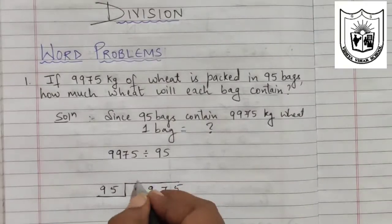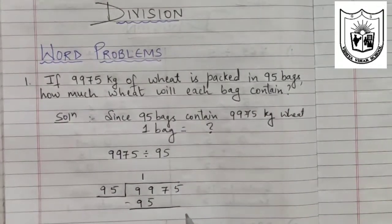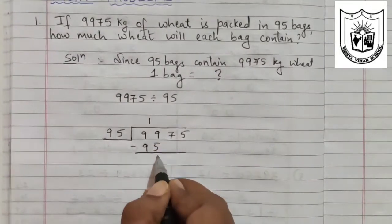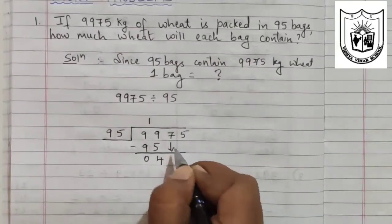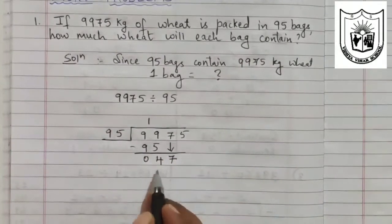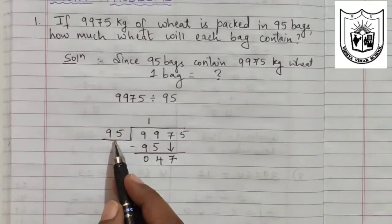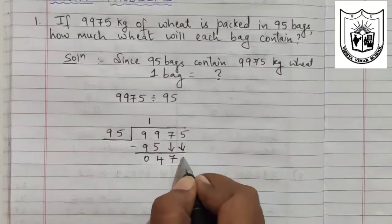So 95, 1's are 95. Subtract. 9 minus 5, we will have 4 remaining here. 0. Bring the next number down. So the new number formed is 47. And 47 is less than 95. So it will not be divisible in 95 tables. So what we will have to do? We will have to bring the next number also down.